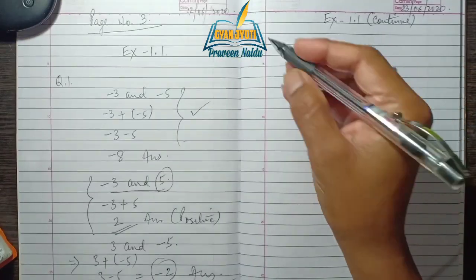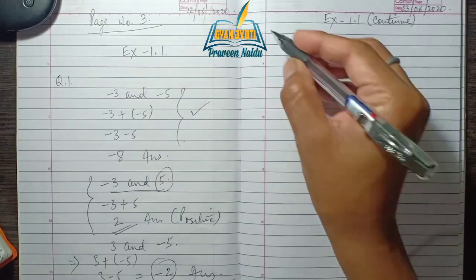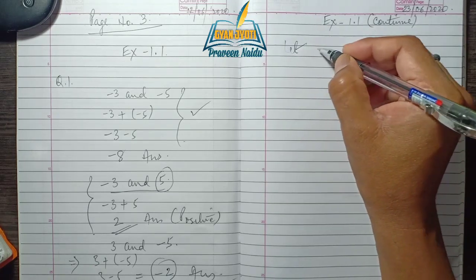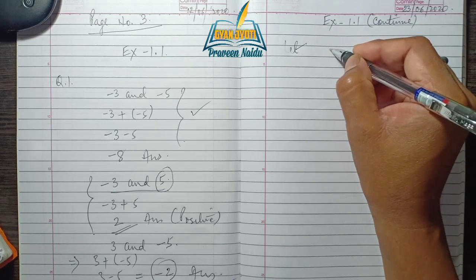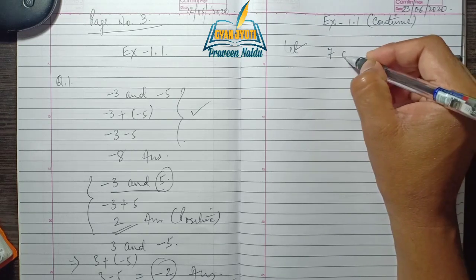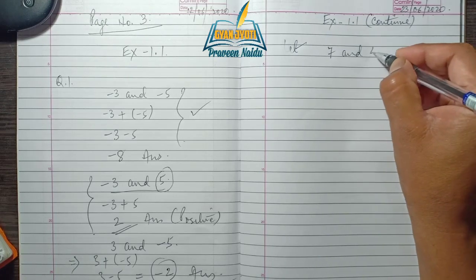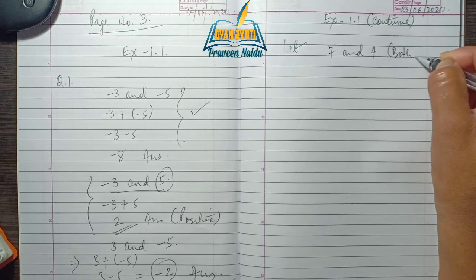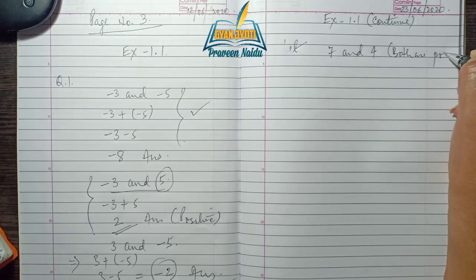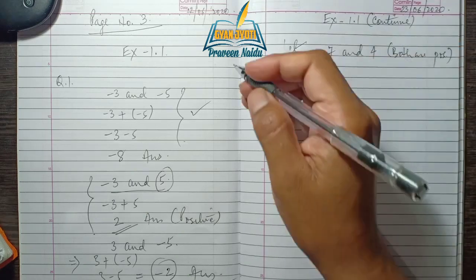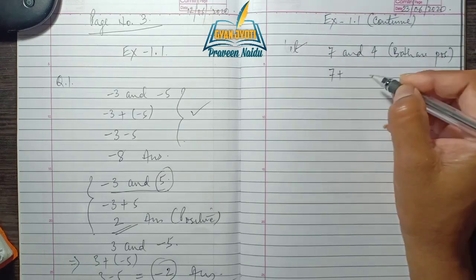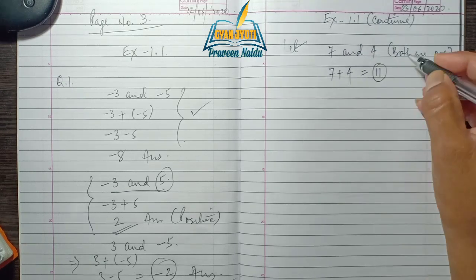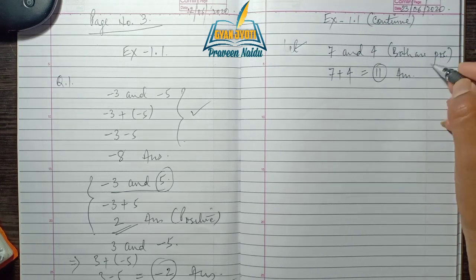For example, let us take the two integers 7 and 4. Both are positive, so we just add the integers and the sum is 11, which is a positive integer.